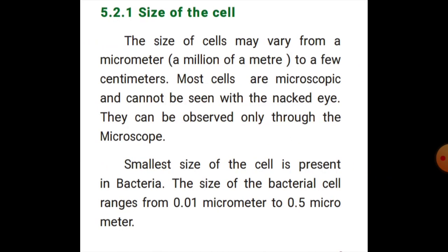The size of cells may vary from a micrometer level to a few centimeters. Most cells are microscopic and cannot be seen with the naked eye; they can be observed only through the microscope. The smallest size of cell is present in bacteria. The size of the bacterial cell ranges from 0.01 micrometer to 0.5 micrometer, where 1 micrometer equals 10 to the power of minus 6 meters.